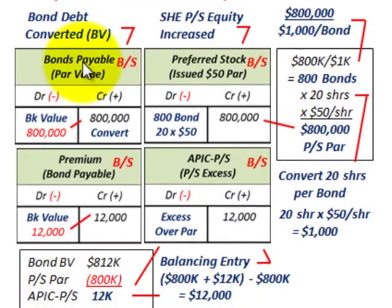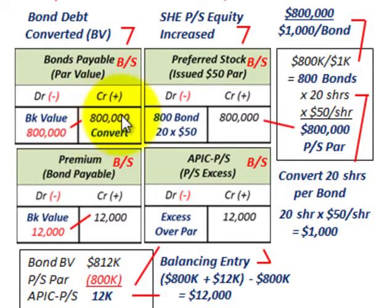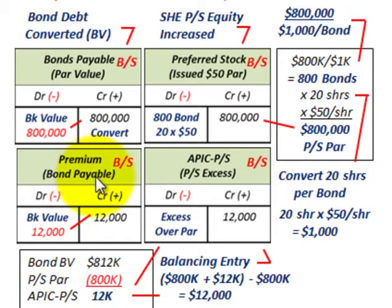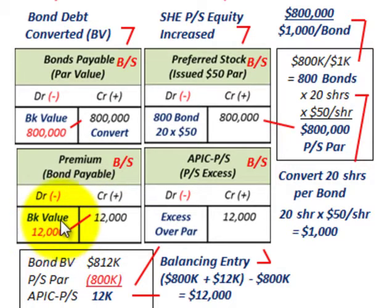Starting with bonds payable: we had a credit of $800,000. To make this conversion, we debit it out and remove it off the books for $800,000. The same for the premium account on bonds payable — we had a credit of $12,000, so we debit it out and remove it off the books for $12,000.